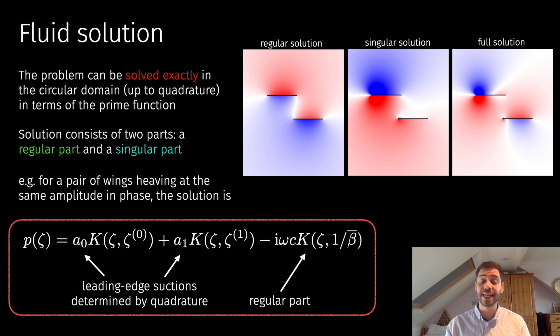In the simply connected case, when you just have one wing doing whatever motion, those integrals can be expressed in terms of special functions, in particular the Bessel function. That's why you see things like the Bessel function appearing in the Theodorsen function, the Sears function, and those other classical aerodynamics functions.